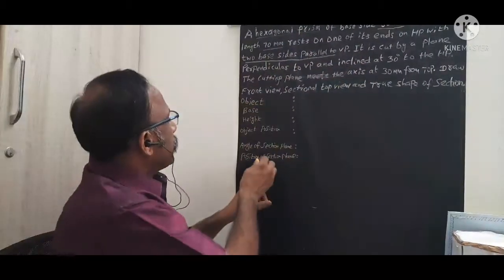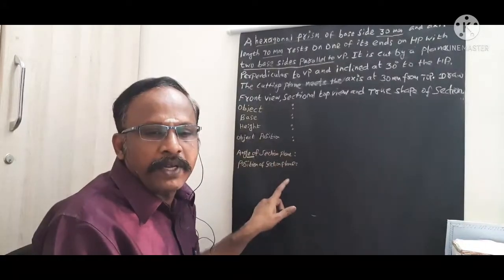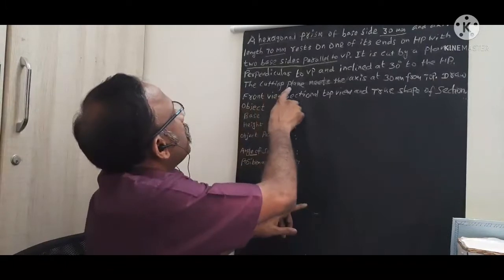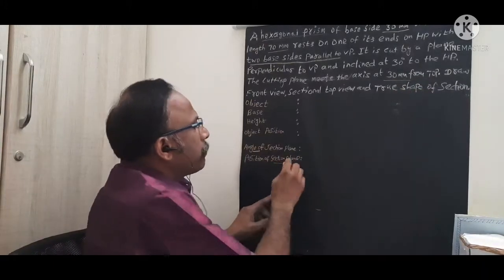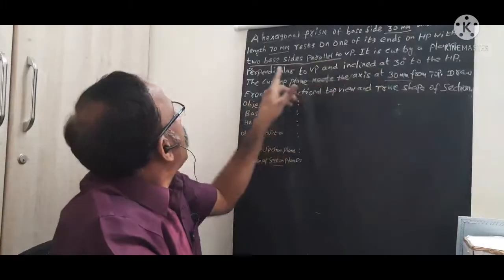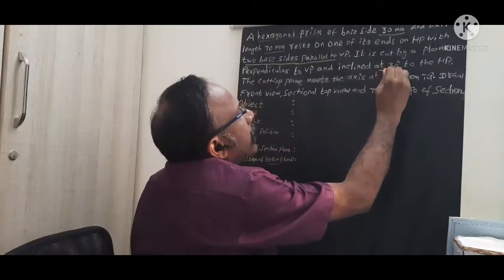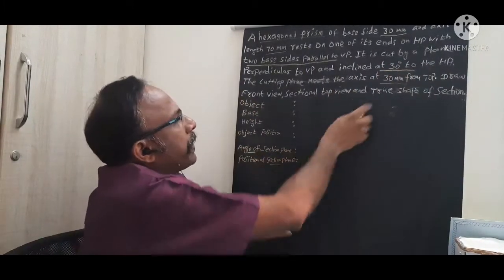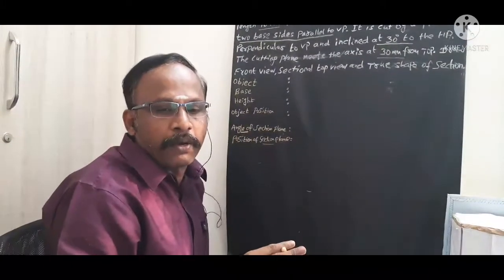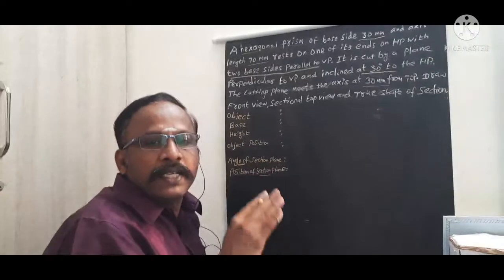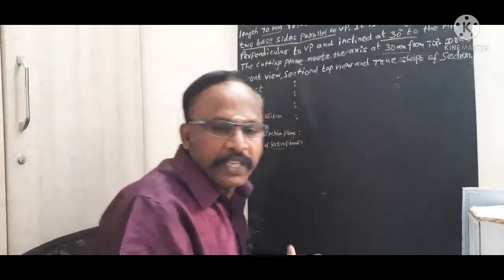From the second sentence, we identify two important parameters for the section: the angle of the section plane and the position of the section plane. The cutting plane meets the axis at 30 mm from the top — that is the position. It is cut by a plane perpendicular to VP and inclined at 30 degrees to HP — that is the angle. These are the parameters we identify before starting the problem. We always assume the solid is resting on HP.